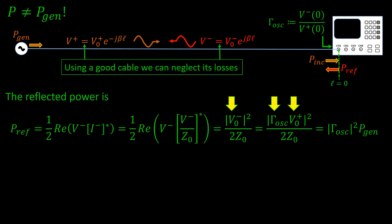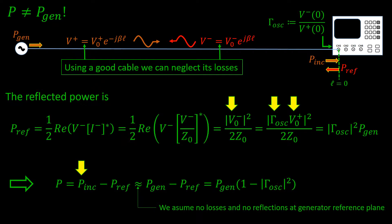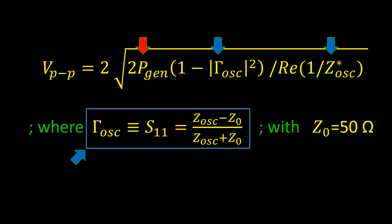The reflection coefficient gamma sub os is in general a complex number, but here we only need its magnitude. With this we have all we need to calculate the power we are measuring. We will connect the generator and the oscilloscope with a good cable, which will be very well matched to our generator. In other words, we can assume that the power incident at the oscilloscope input is just the power of the generator. We conclude that in order to predict the peak-to-peak voltage, we only need two things: the power of the generator and the oscilloscope impedance.